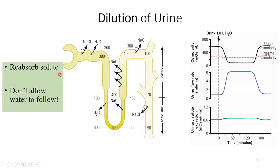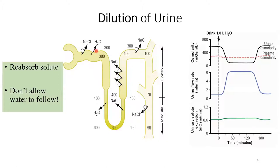The intention is to reabsorb solute and not allow water to follow. In the nephron, the PCT is where iso-osmotic reabsorption of water and solute occurs — this is constant and cannot be changed. It's the thick ascending limb of the loop of Henle where you can dissect the solute from the water. This is also called the diluting segment, where you reabsorb sodium chloride into the interstitium but water cannot follow, and hence the tubular fluid becomes dilute.